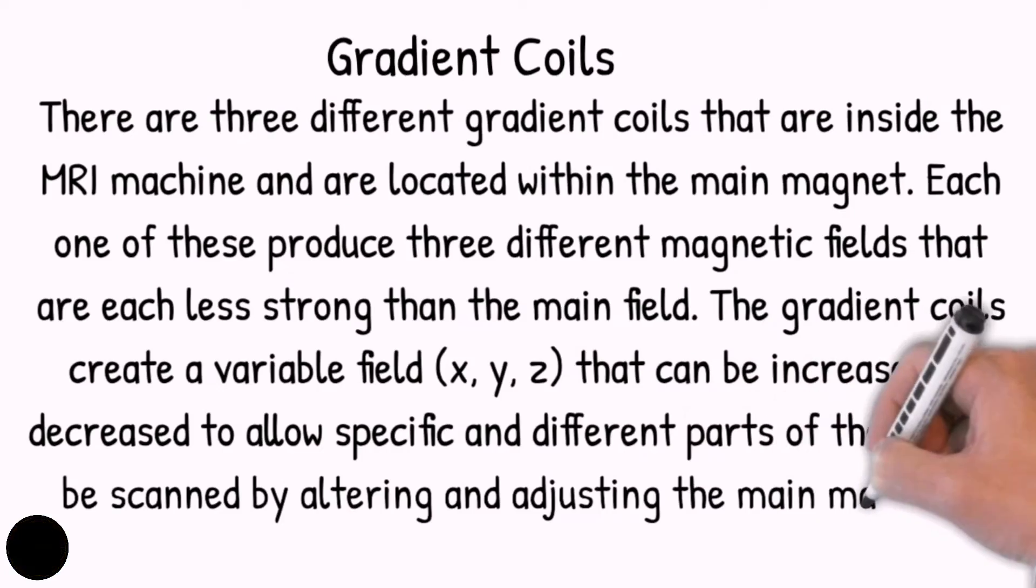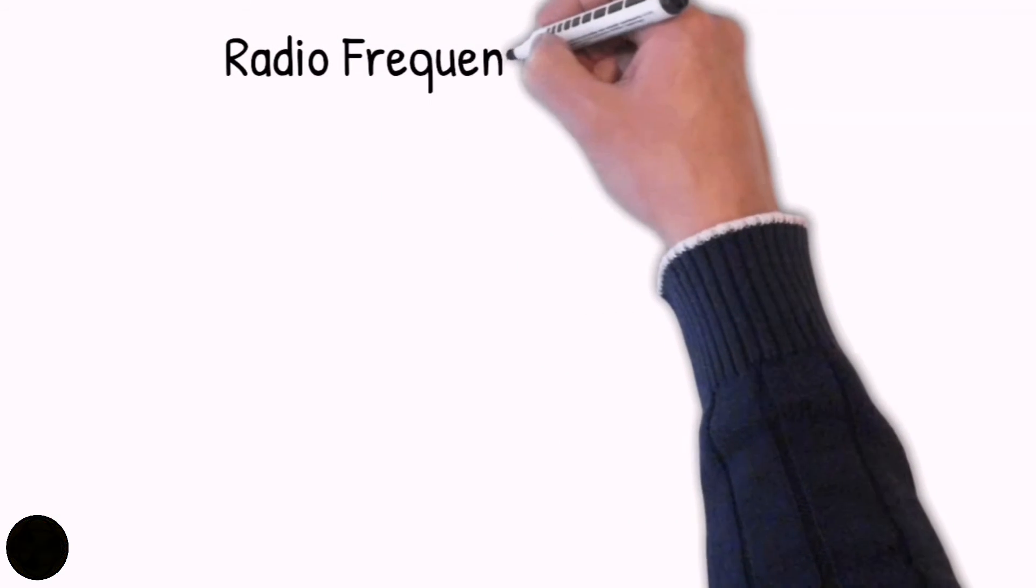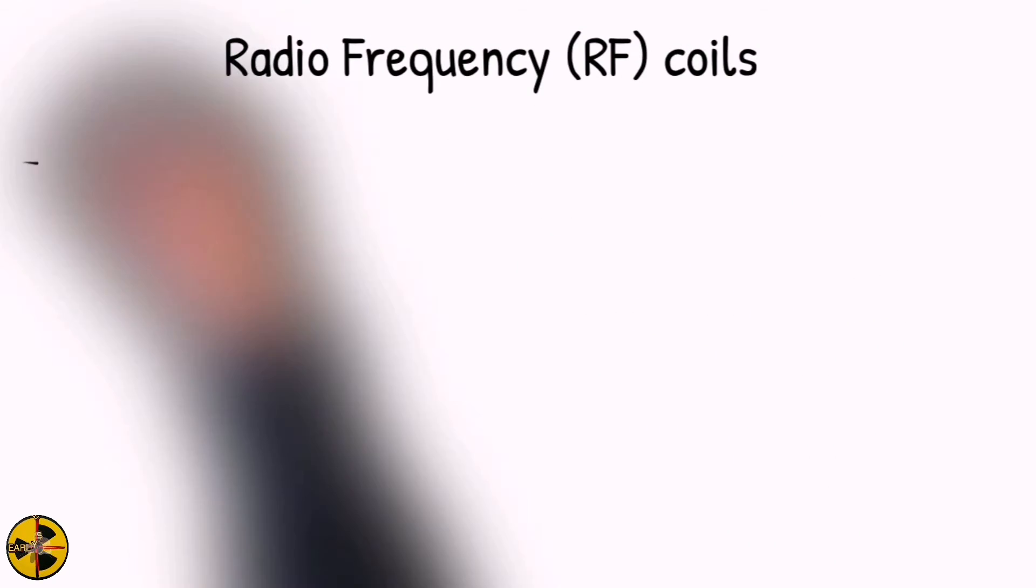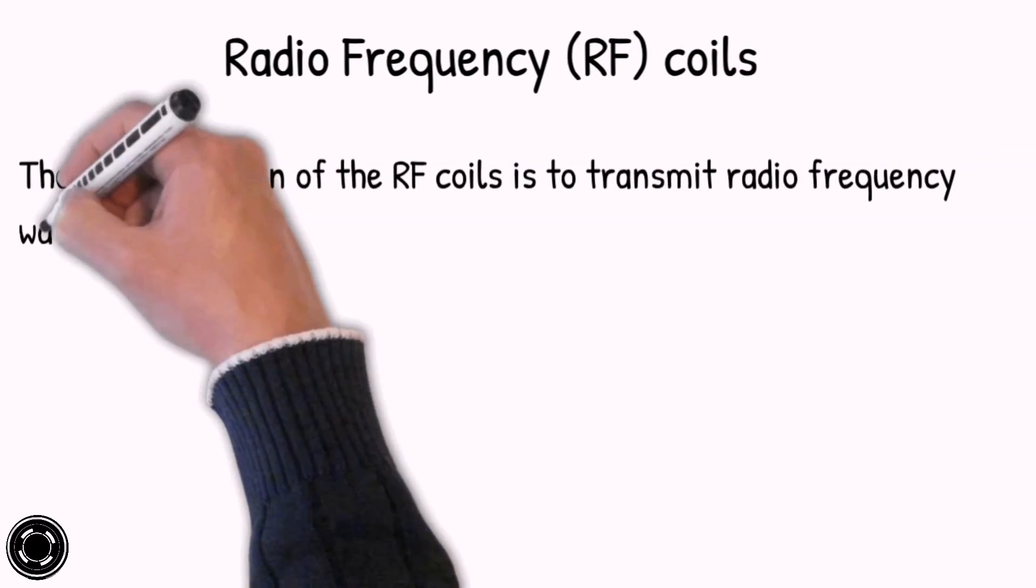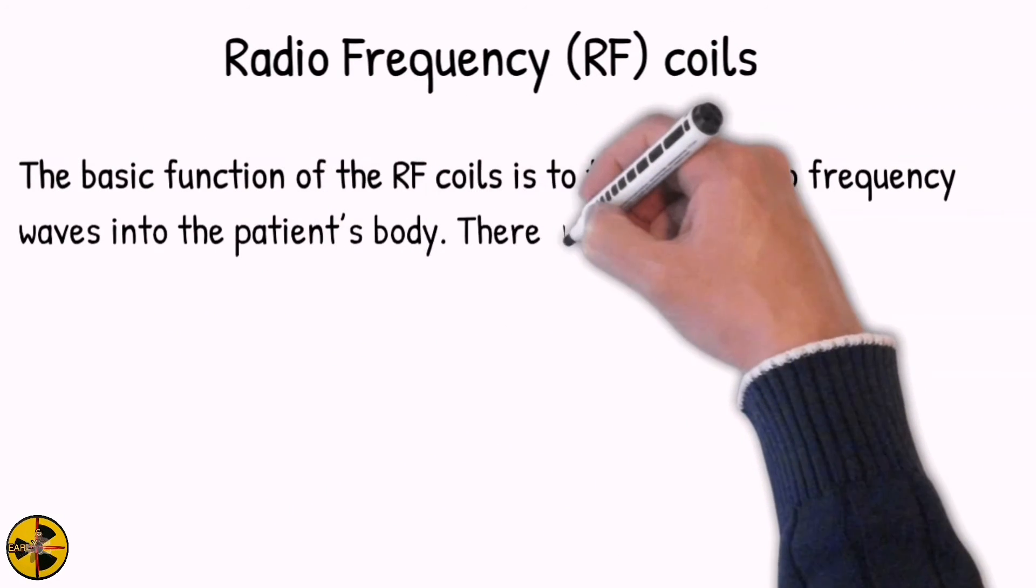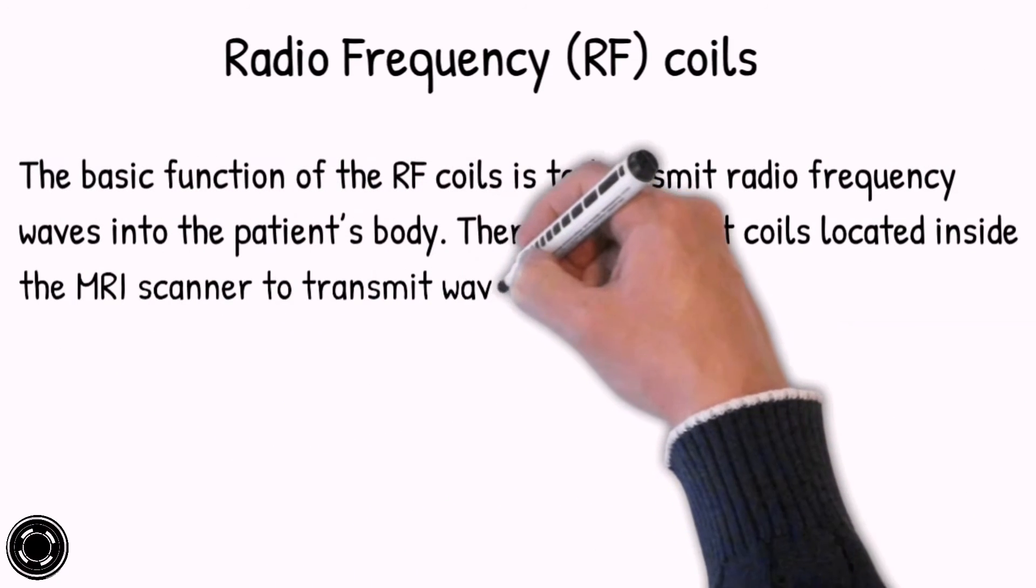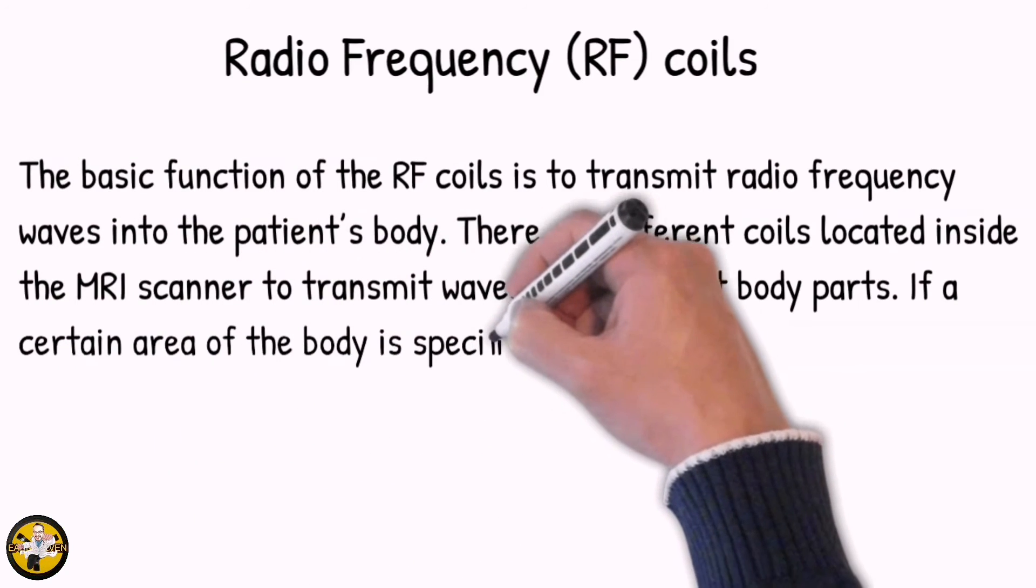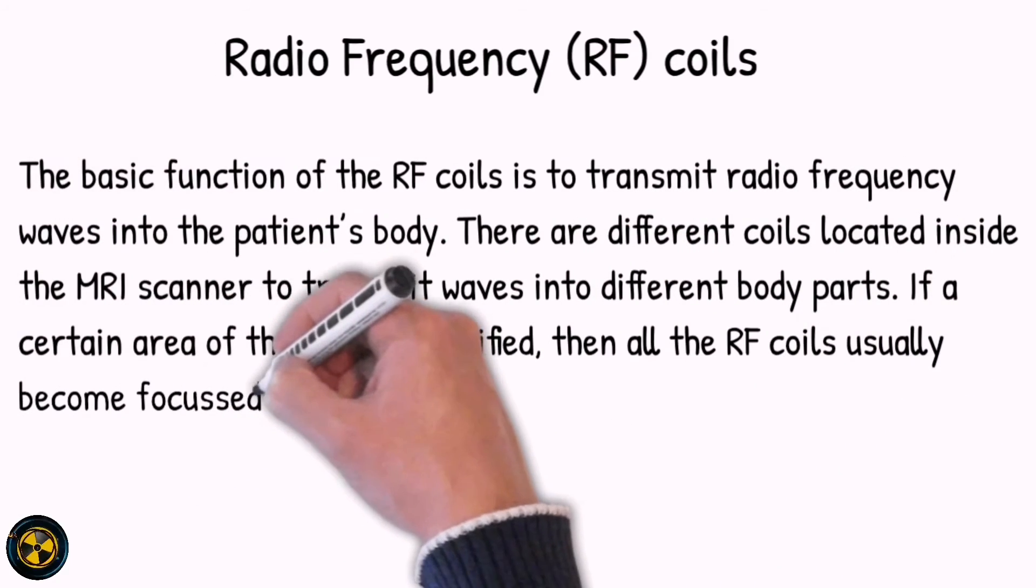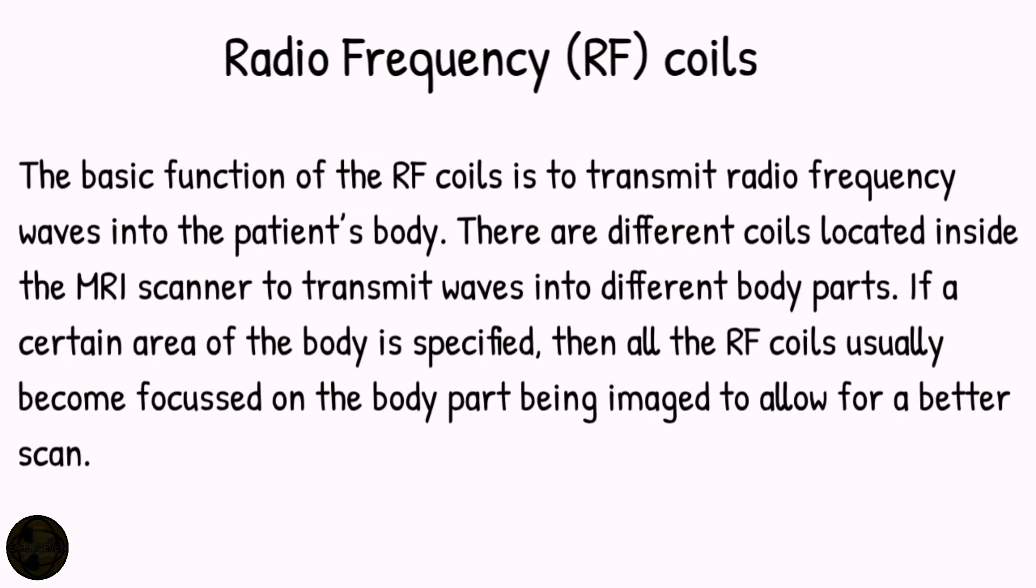The next component is the radio frequency coil, or the RF coils. The basic function of the RF coil is to transmit radio frequency waves into the patient's body. There are different coils located inside the MRI scanner to transmit waves into different body parts. If a certain area of the body is specified, then all the RF coils usually become focused on the body part being imaged to allow for a better scan.